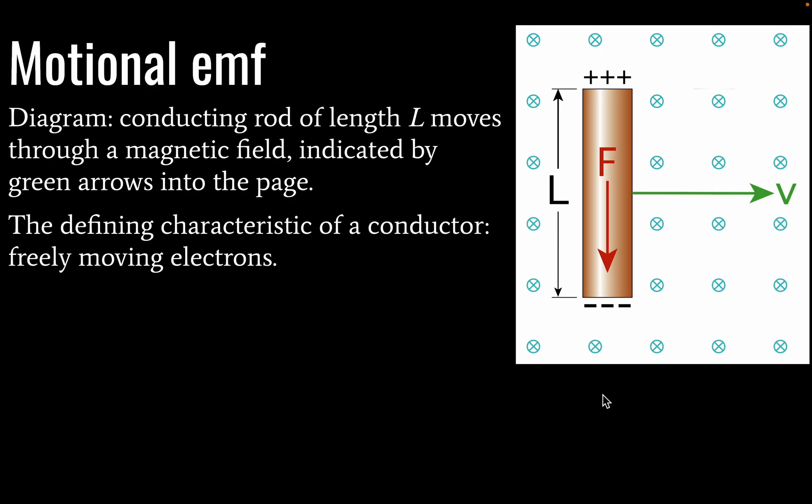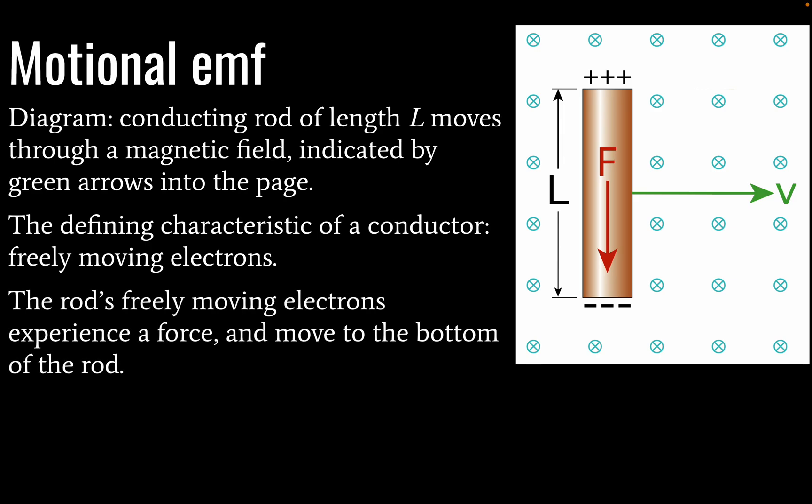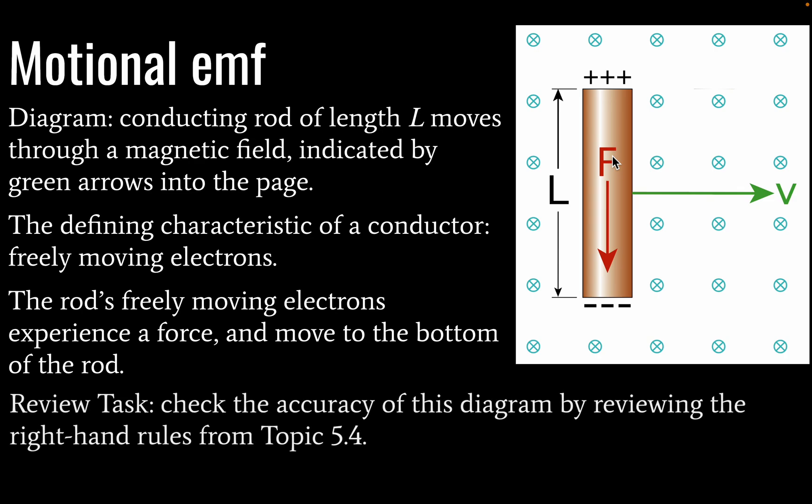A defining characteristic of a conductor is our freely moving electrons. They can move through the conductor as they like and our electrons then are going to experience a force. They will move to the bottom of the rod leaving a positive charge at the top of the rod and this is what we need by definition for an EMF.